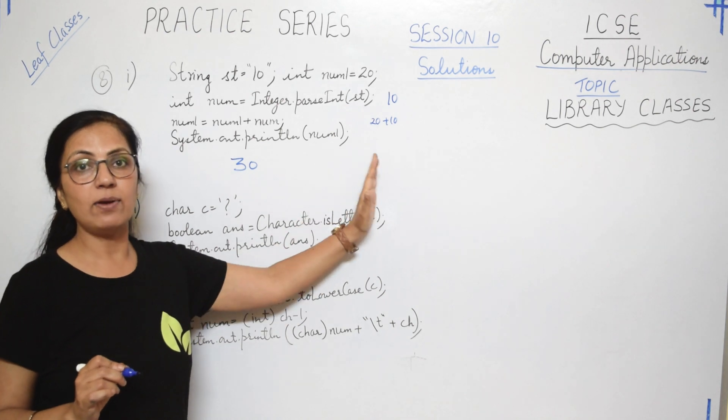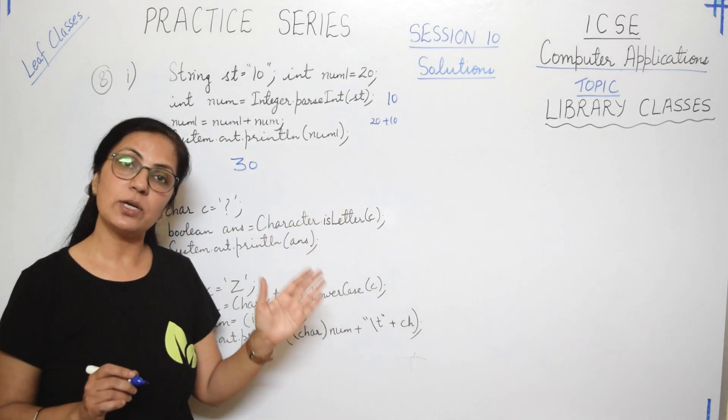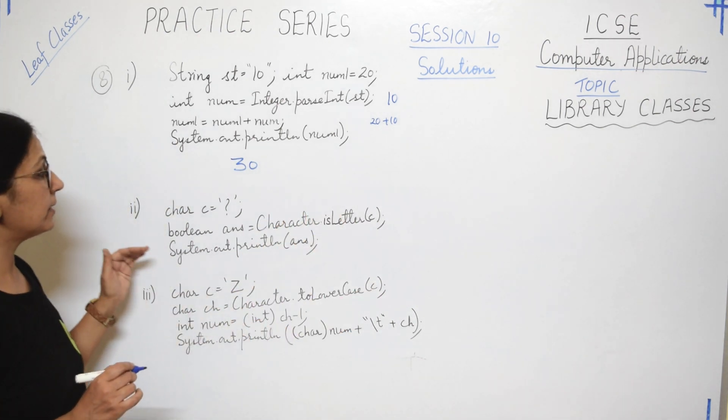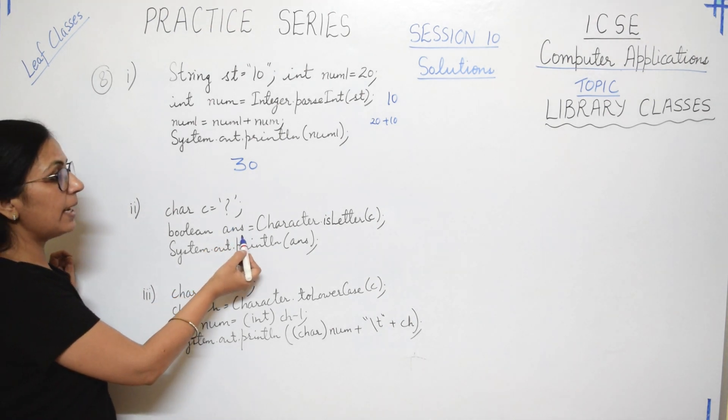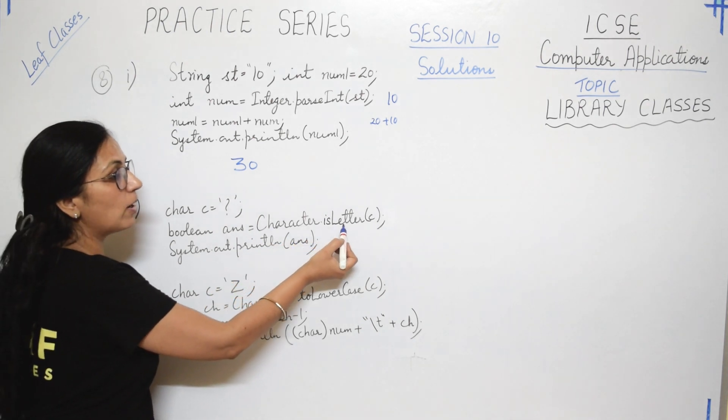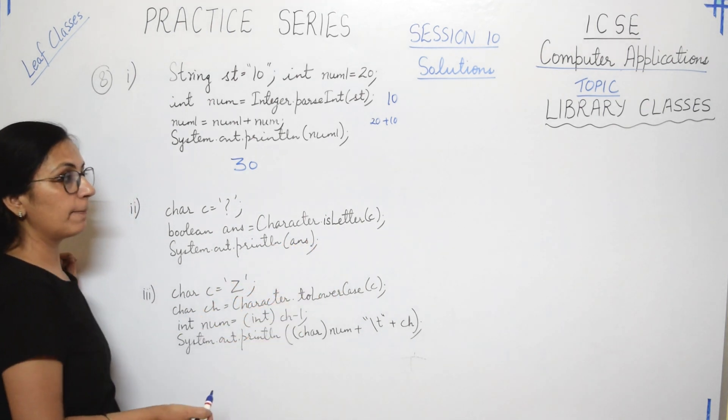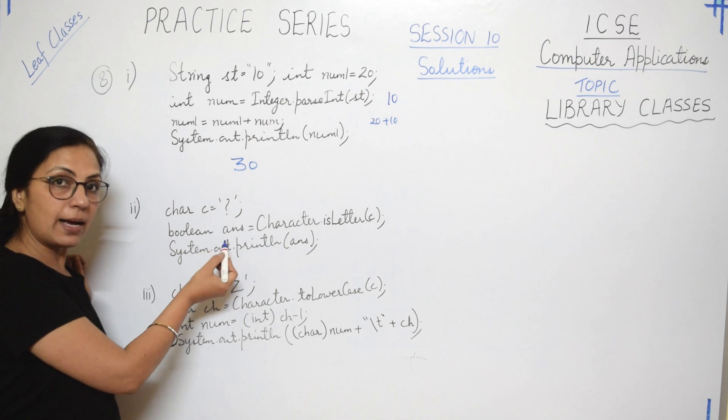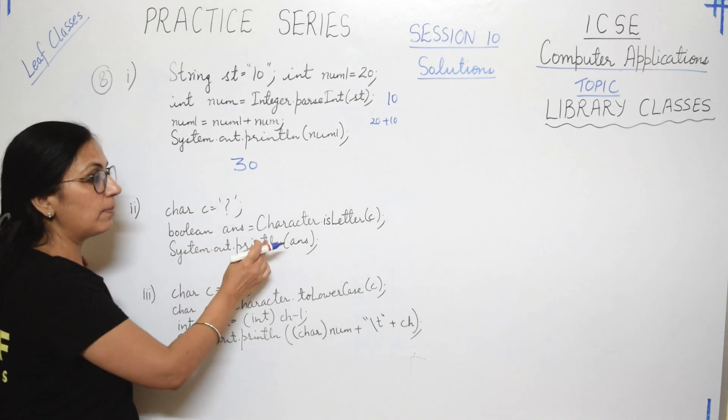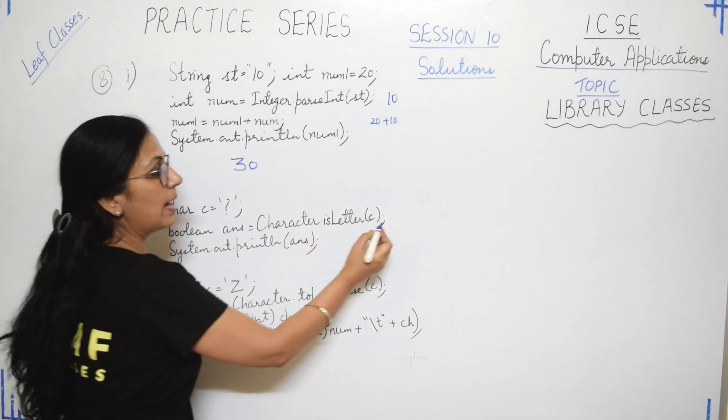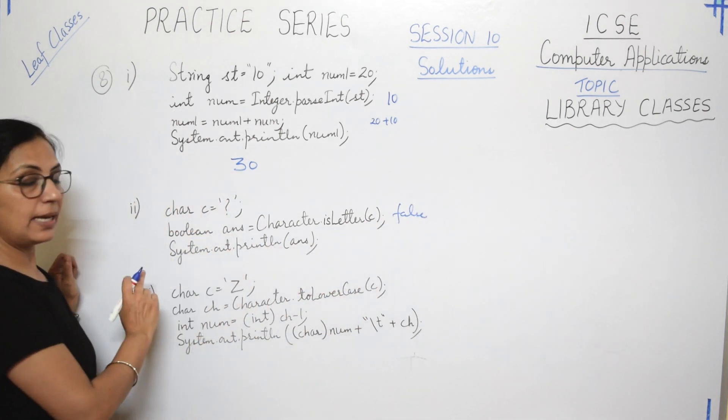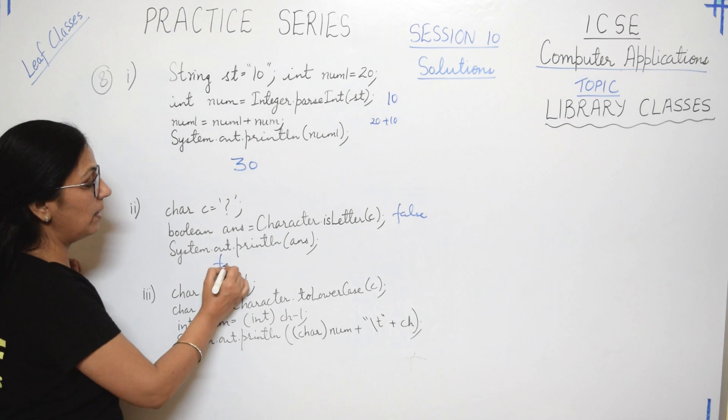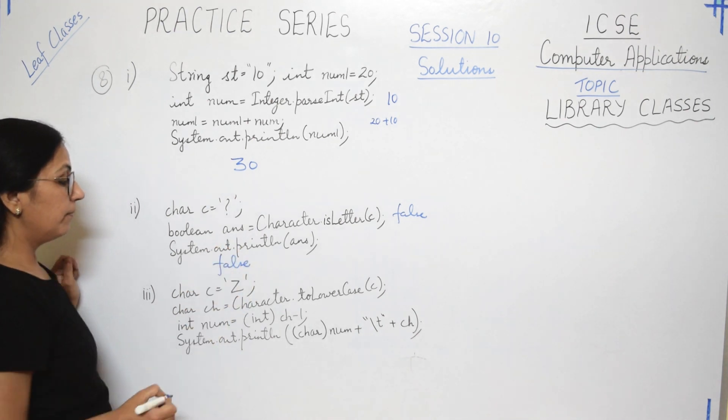The second part of this: char c equals to question mark, boolean ans equals to Character.isLetter of c. Is this question mark a letter? No, that means this ans will have the value of false and print ans, so the output will be false.